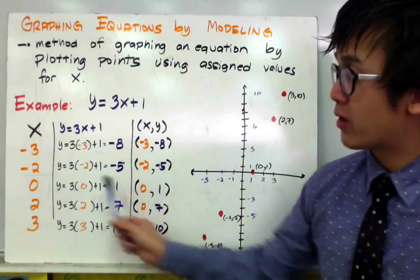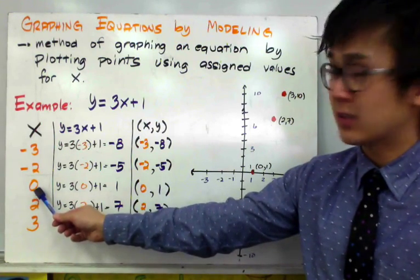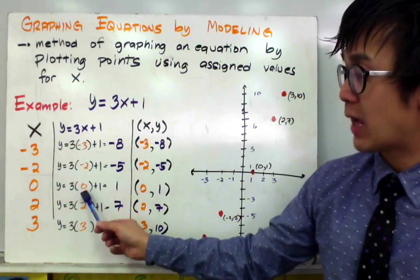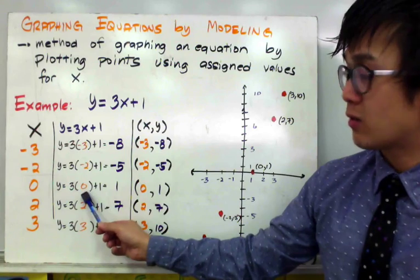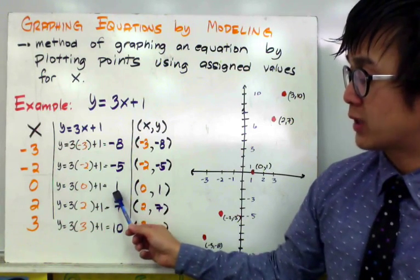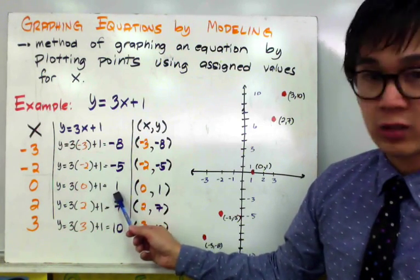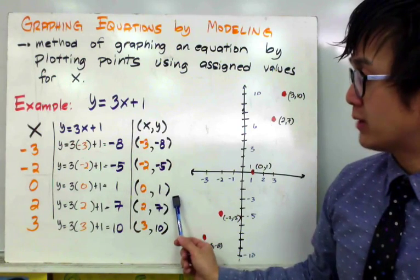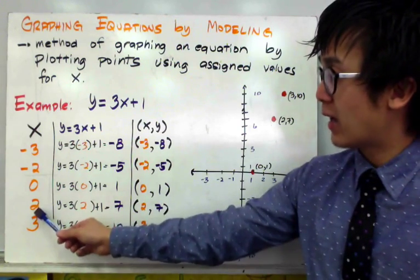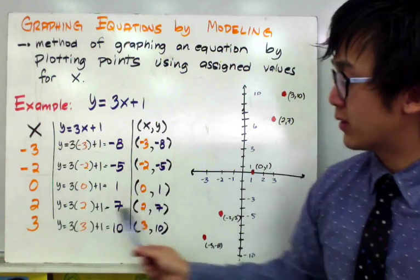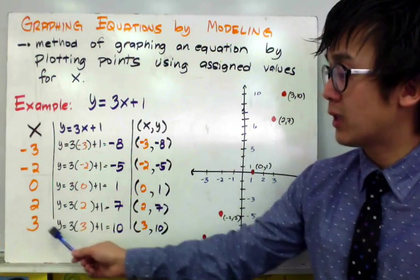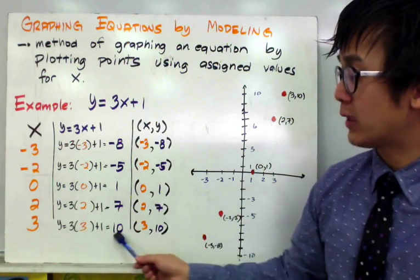For our third point, given that x is 0, plugging it into our equation, 3 times 0 is 0 plus 1, which gives a y value of 1. So our third point is 0 and 1. An x value of 2 will give us a y of 7. And if x is equal to 3, y will equal 10.